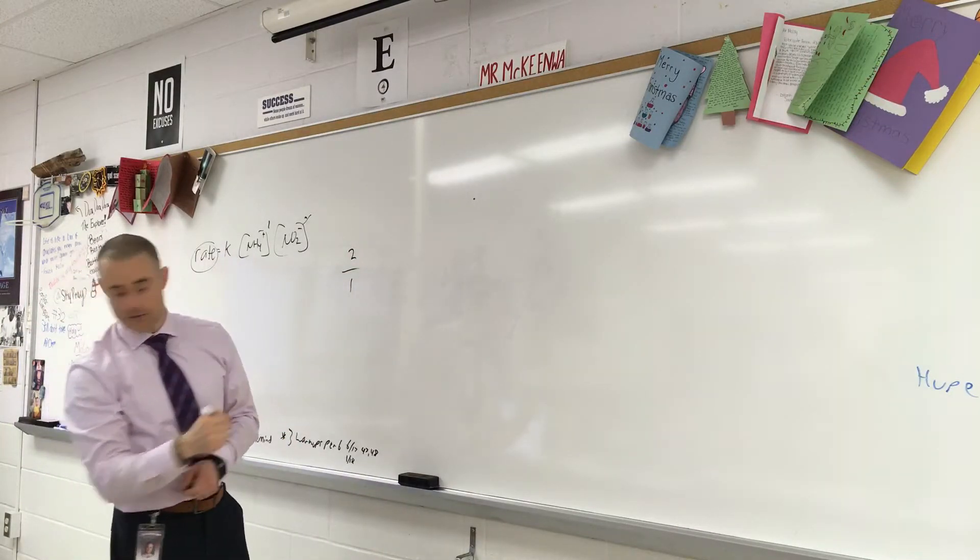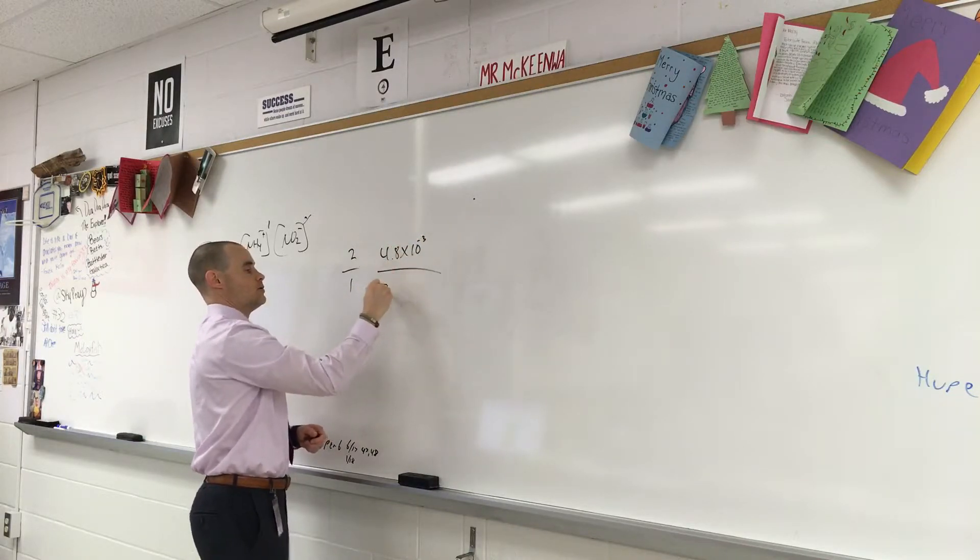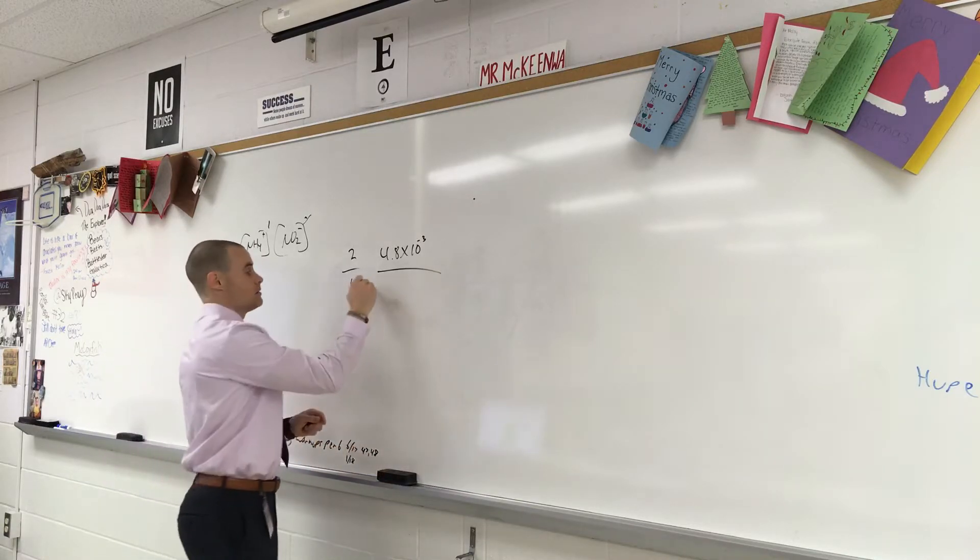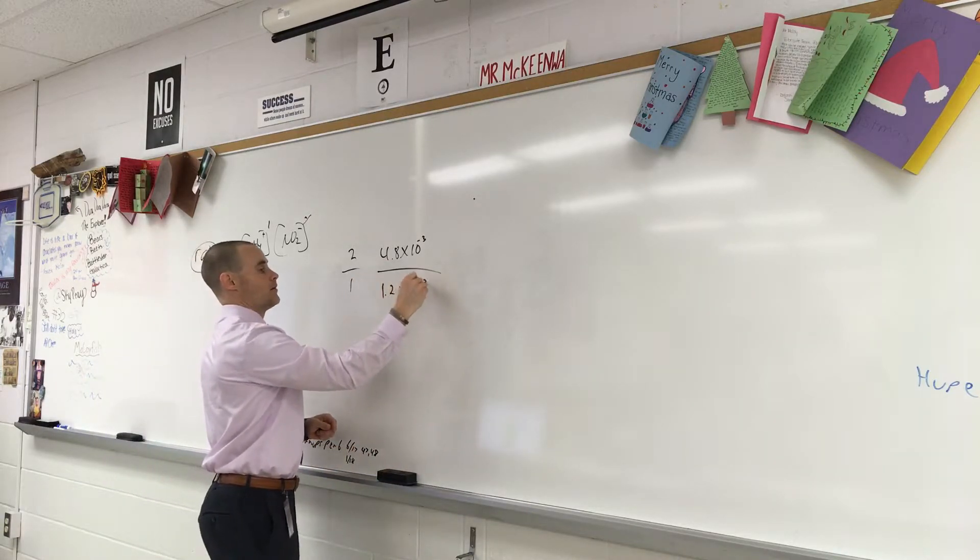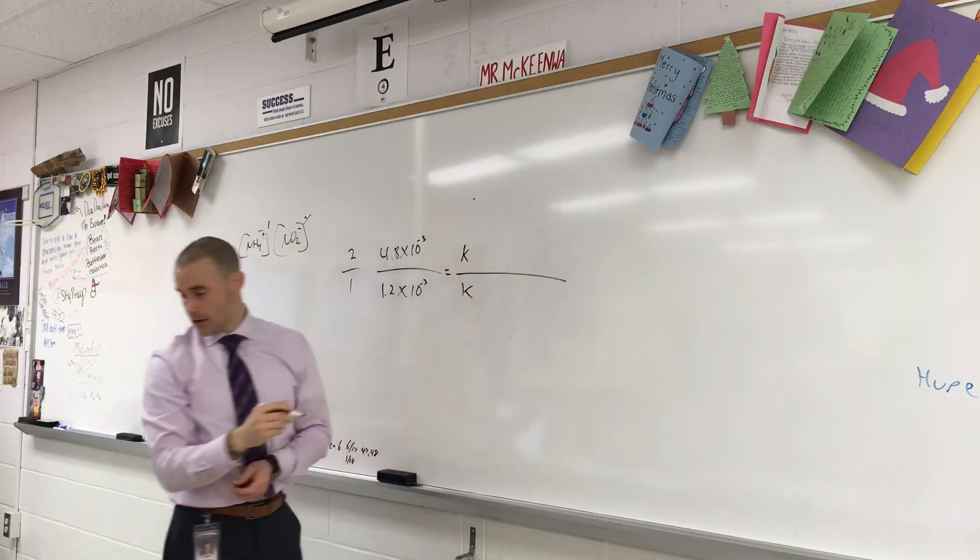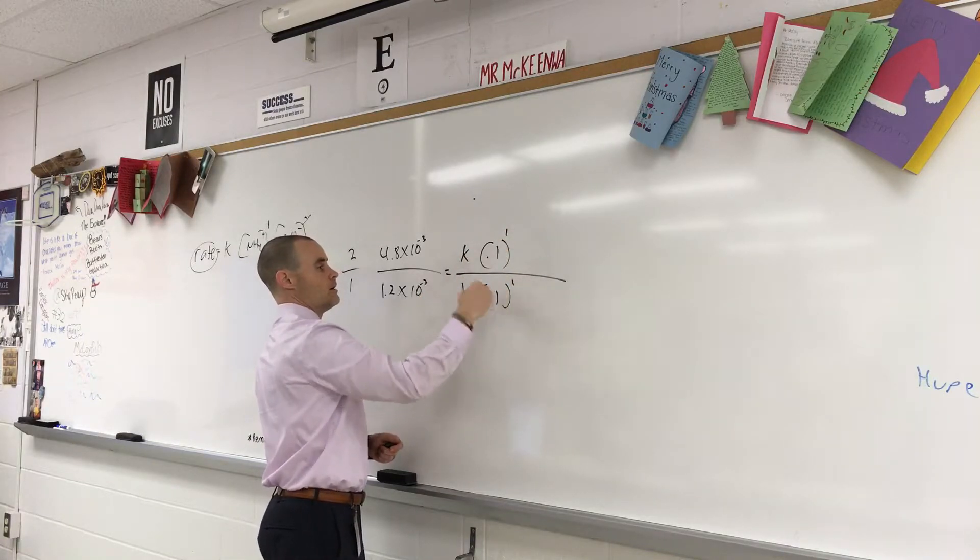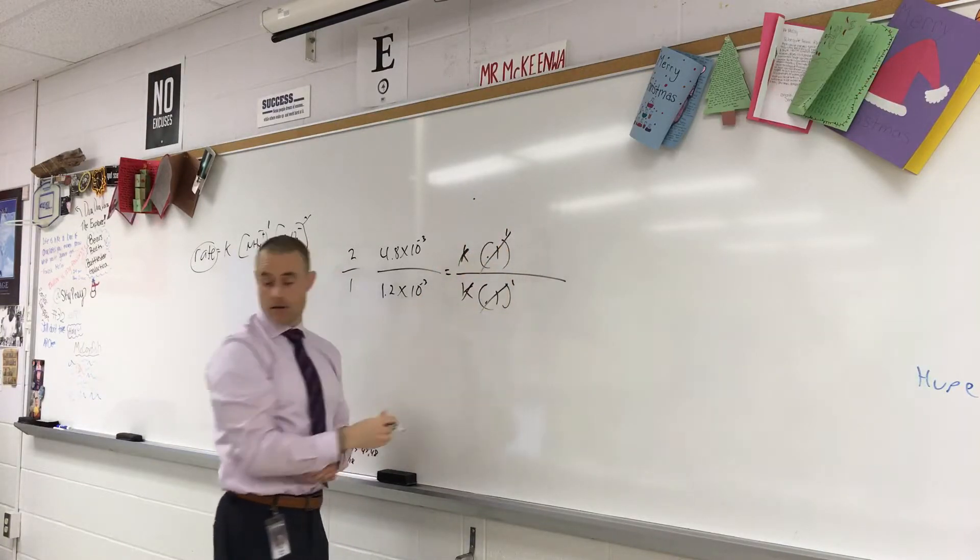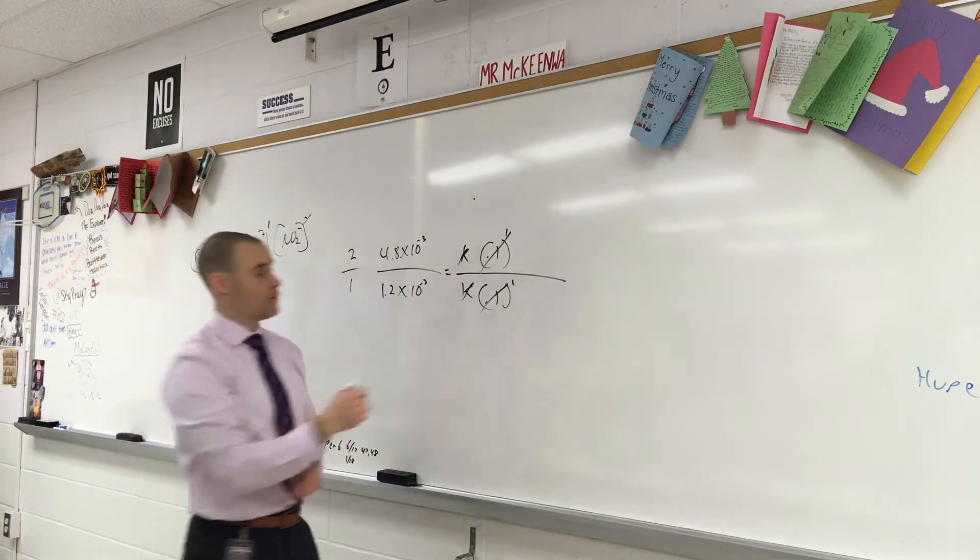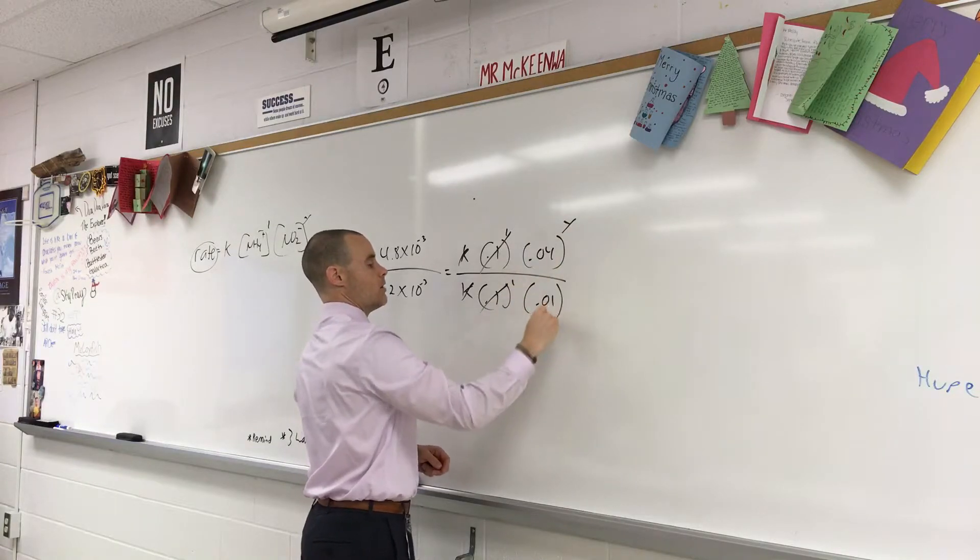So 2 divided by 1. And if we do that, it's 4.8 times 10 to the negative 3 divided by, no, that's the other one. So 1.2 times 10 to the negative 3 equals k over k. This is 0.1 to the 1, 0.1 to the 1. These don't matter because they all cancel out, the same number.